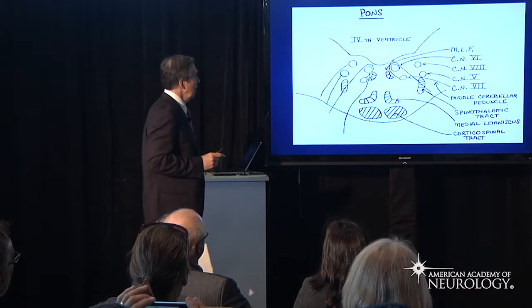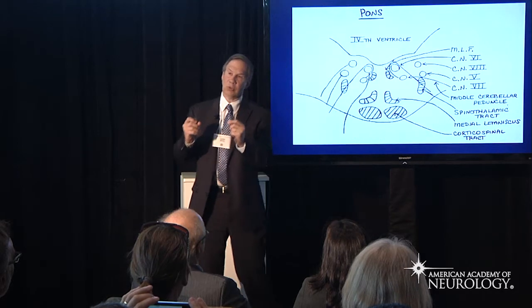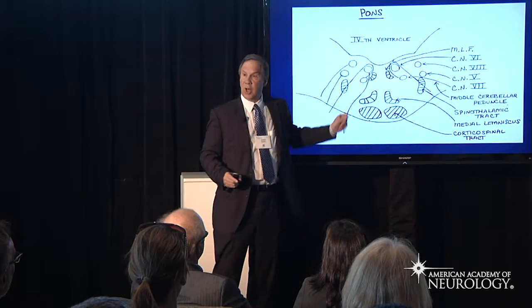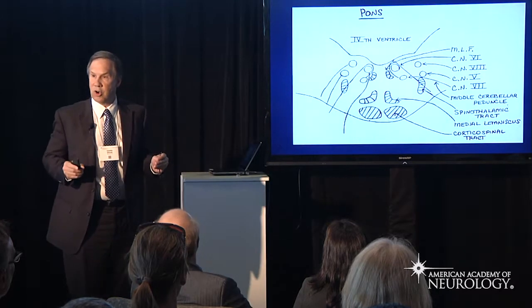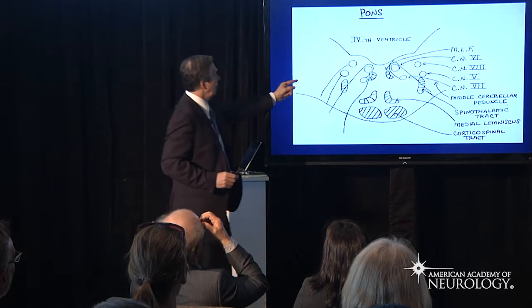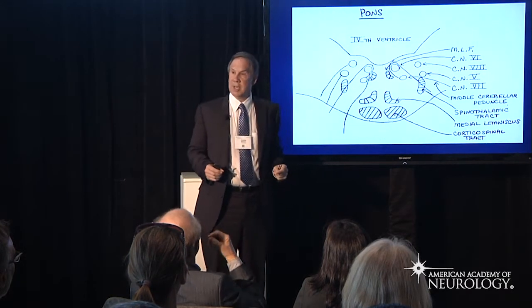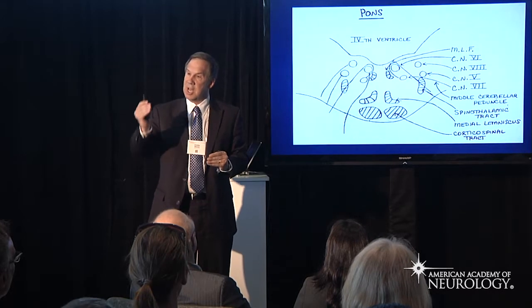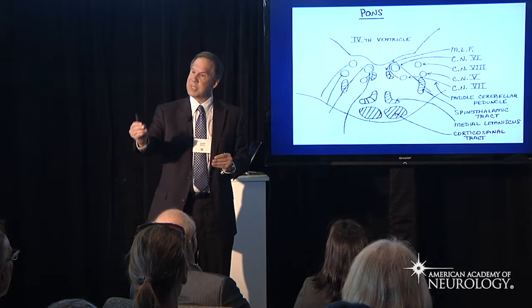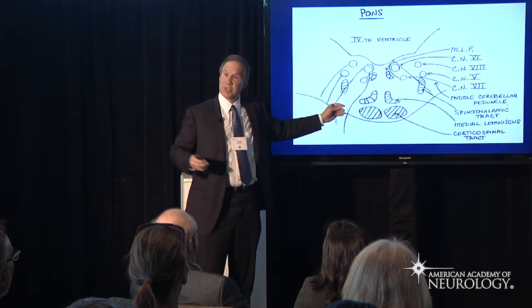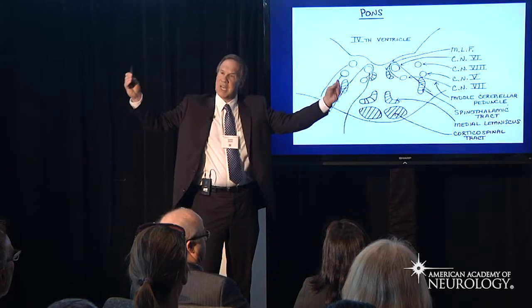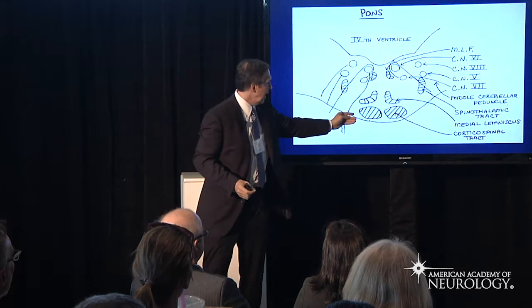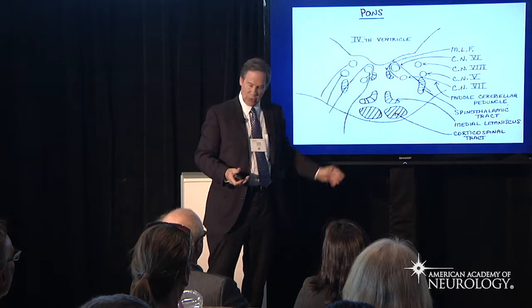When we go down to the pons, we see further anatomical clues that help us localize. Some cranial nerve nuclei are very much in the midline, like CN6, while others are more lateral, like CN5 and CN8. Likewise, the sensory tracts are separated transversely: vibration and position sense lie most medially, carried in the medial lemniscus. Laterally, carrying pain and temperature, are the spinothalamic tracts. The corticospinal tracts lie anterior throughout the course of the brainstem.